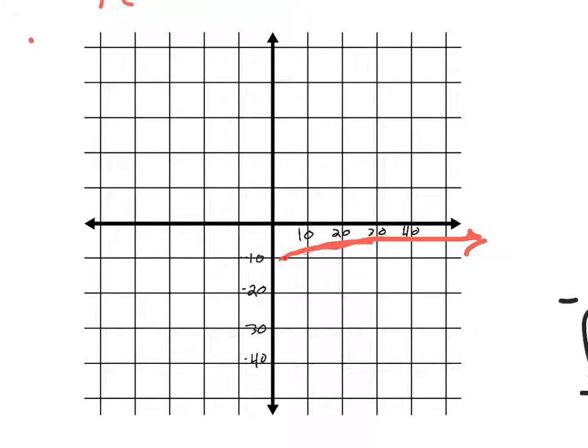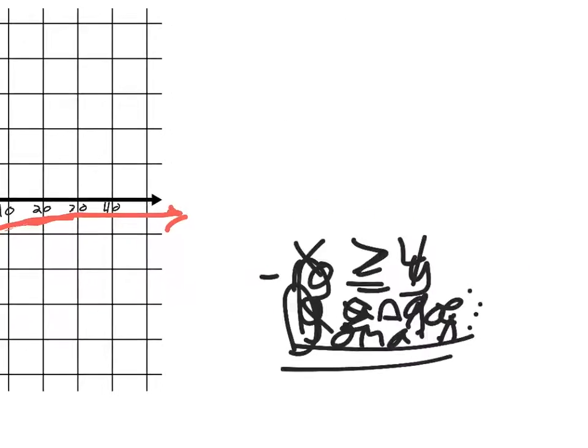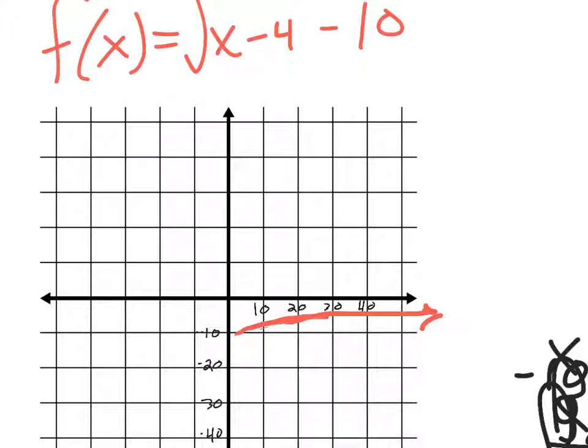Starts on negative 4 on the x-axis and goes infinitely positive. So that's where we get the domain from. All the values for x that can go into the function. Starts on negative 4, never has an end. So we say that x is greater than negative 4.